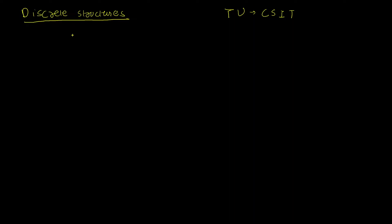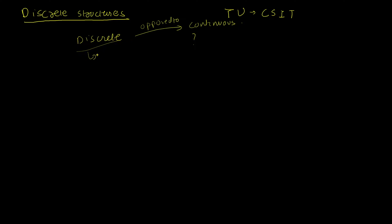Let's begin with the definition. What does a discrete structure actually mean? The right question to ask is: discrete opposed to what? The answer is continuous. There are two kinds of distinct physical quantities in nature — discrete quantities that can be quantized or divided into chunks, and continuous quantities that cannot be quantized or divided into chunks.